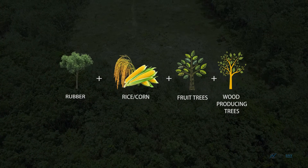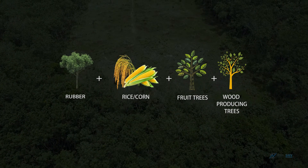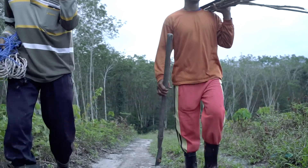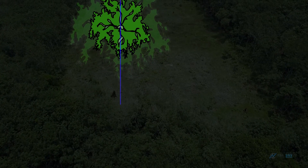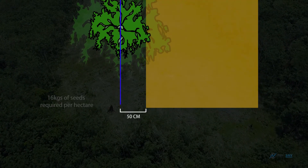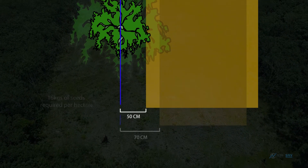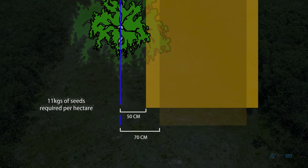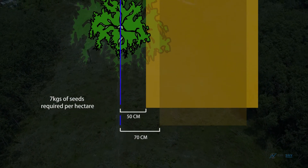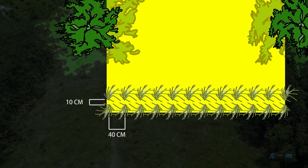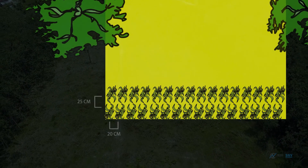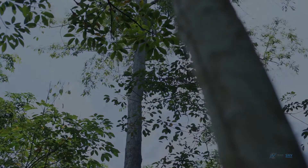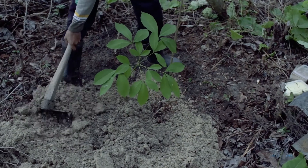Rubber intercropping with rice or corn, fruit trees, and wood-producing trees: after land preparation, rubber is planted together with rice or corn, fruit trees, and wood-producing trees. Distance between rice plants from rubber trees: Year 1, 50 cm with 16 kg of seeds required per hectare; Year 2, 70 cm with 11 kg of seeds required per hectare; Year 3, 7 kg of seeds required per hectare. Spacing between rice plants: 10 x 40 cm. Distance between maize plants: 20 x 25 cm with 7 kg of seeds required per hectare. Planting distance between wood trees is 12 metres, planted together with rubber.